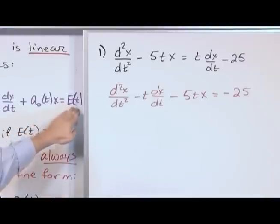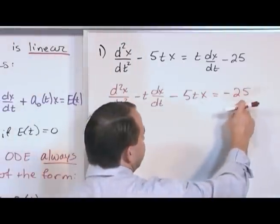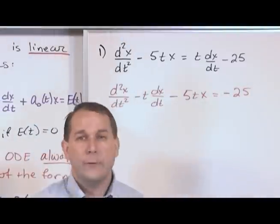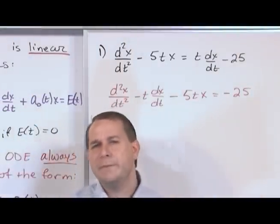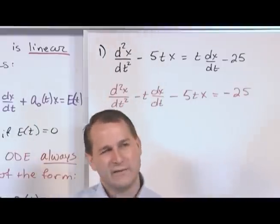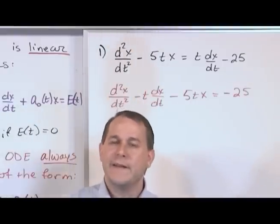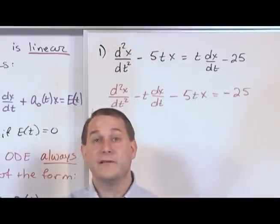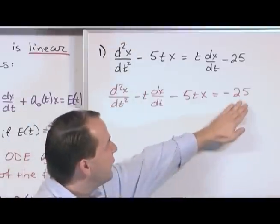On the right-hand side of the equal sign, do I have e of t, which is just another function of time, my forcing function. On the right-hand side of the equal sign, I have negative 25, which is a function of time. So that trips people up sometimes. You look at constants, and you're like, well, that's not a function of time. Well, don't forget that any constant really is a function of time, it just doesn't change.